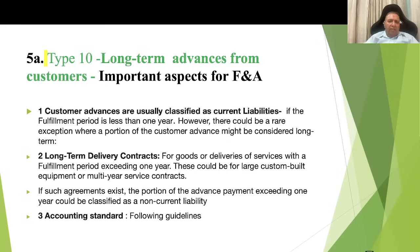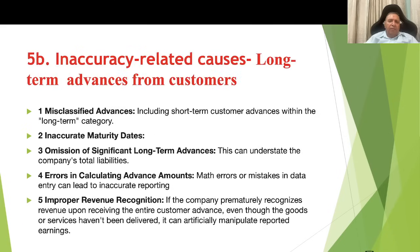Type 10 — long-term advances from customers. Customer advances are usually classified as current liabilities if the fulfillment period is less than one year. However, there could be rare exceptions — for example, long-term delivery contracts for goods or services with a fulfillment period exceeding one year, such as large custom-built equipment or multi-year service contracts. If such agreements exist, the portion of the advanced payment exceeding one year could be classified as a non-current liability. Relevant accounting standards need to be followed.